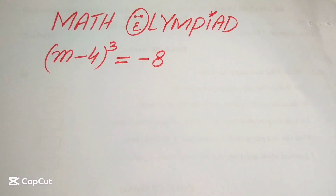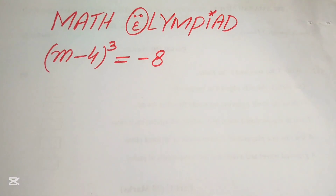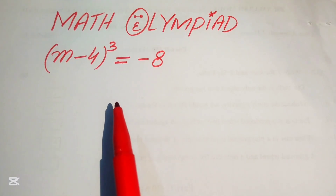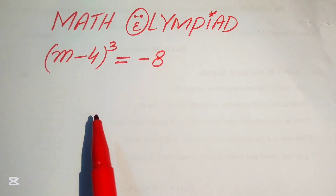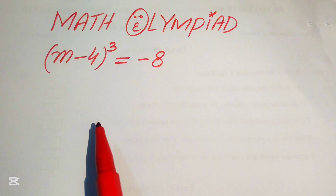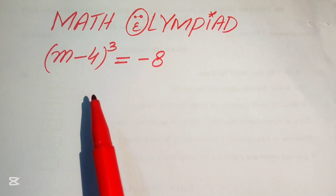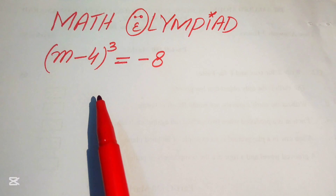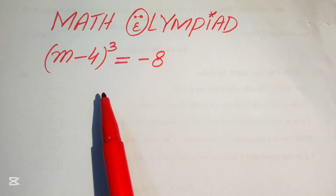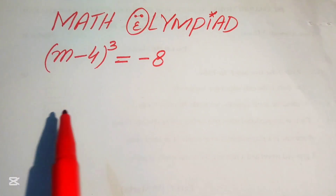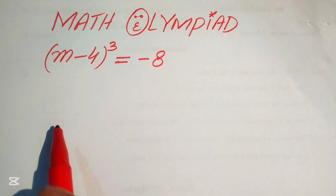Hello everyone, welcome. We're going to solve this Math Olympiad algebra problem. We have (M - 4)³ = -8 and we solve for the values of M. This is a cubic equation, which means it has three roots, so we need to find all three roots.